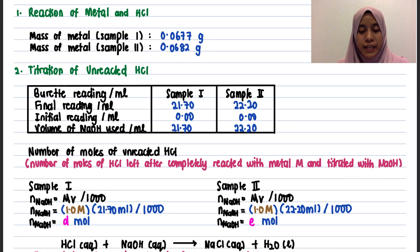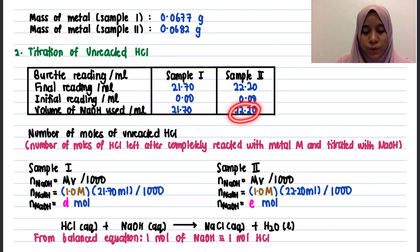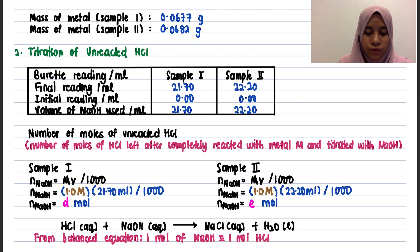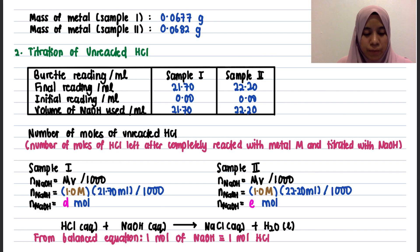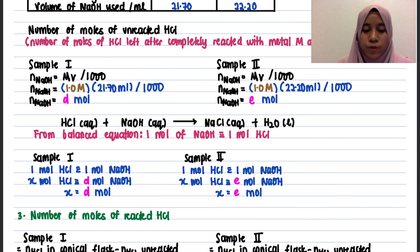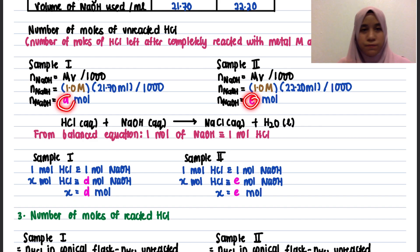From the titration, find the number of moles of NaOH using N = MV/1000 (volume in ml, molarity is 1.0 molar) for both Sample 1 and Sample 2. Since the volumes are different, the moles will differ for each sample — that is fine, as we will calculate the average at the end. This gives us the moles of NaOH for each sample.